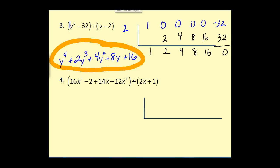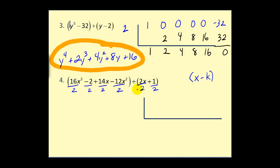Let's try one more. Notice this last problem is not in the form we need — the divisor must be in the form x minus k. Normally we would perform long division, but there is a way to work through this. If we divide everything by two, this does not affect the quotient. We can divide the divisor and all terms by two. Also, the terms are not in descending order, so rewriting gives us eight x cubed minus six x squared plus seven x minus one, divided by x plus one-half.